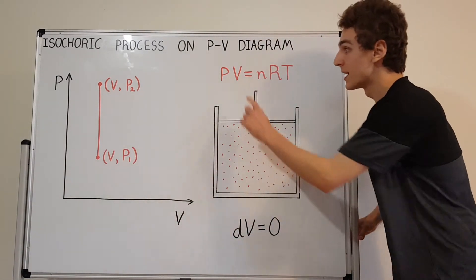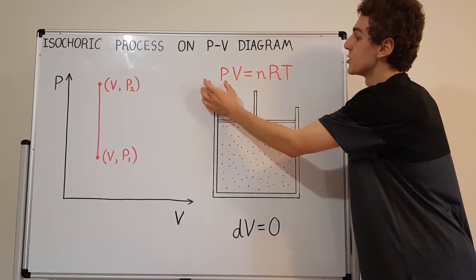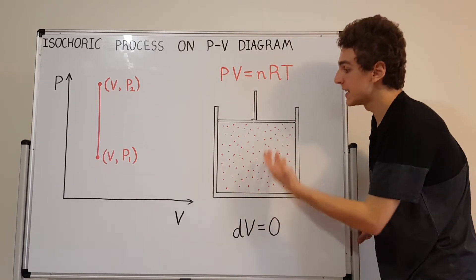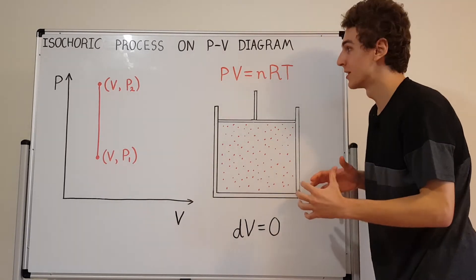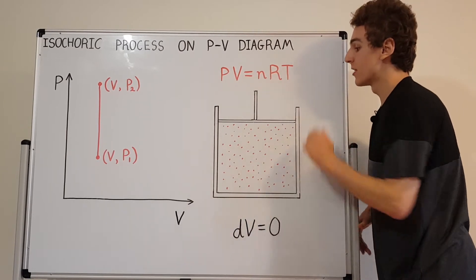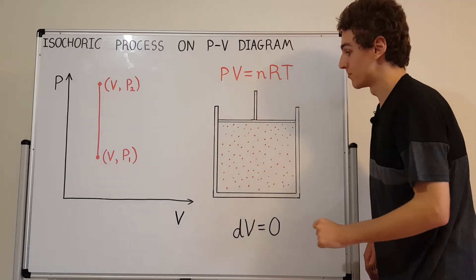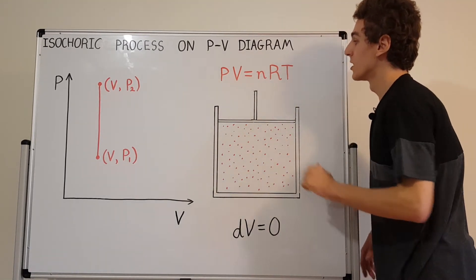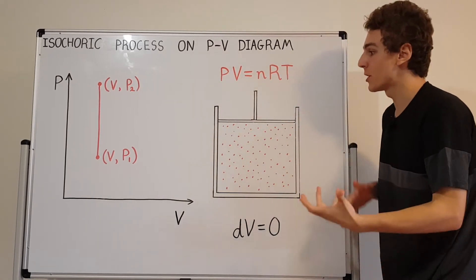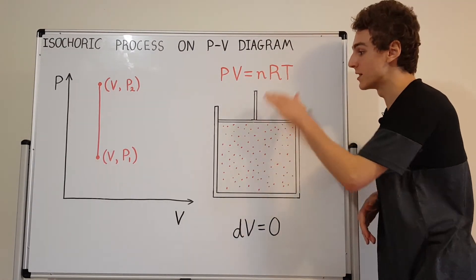The pressure and temperature are free to change, though. Going back to the ideal gas law, the volume is fixed, the number of moles is fixed, and R is a constant, so the only things that can change are pressure and temperature. If heat flows in, that's going to increase the temperature and also increase the pressure. If heat flows out, the temperature is going to fall and the pressure is also going to fall. So by just changing the temperature, you can change the pressure — you can't change the pressure by compressing or expanding it because the piston is fixed.